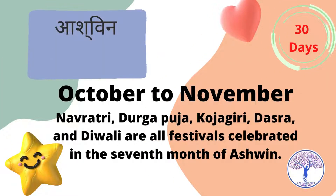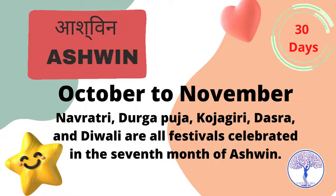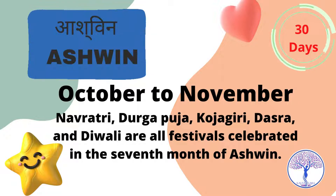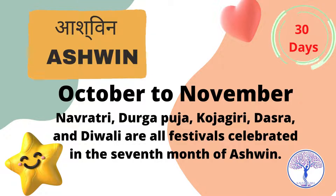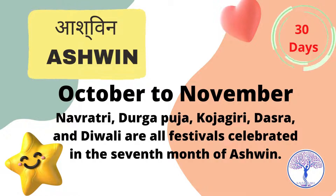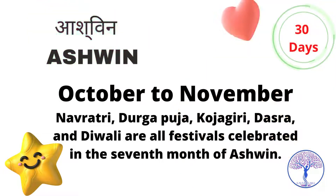Ashwin, October to November. Naratri, Durga Puja, Kojagiri, Dasra, and Diwali are all festivals celebrated in the seventh month of Ashwin.